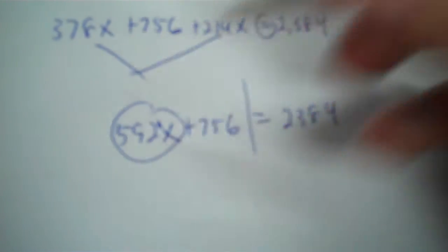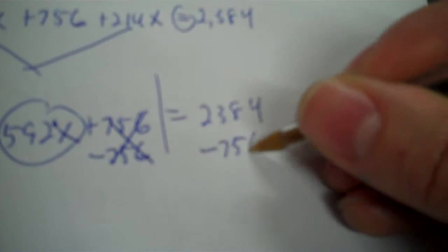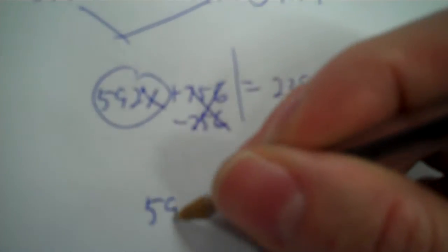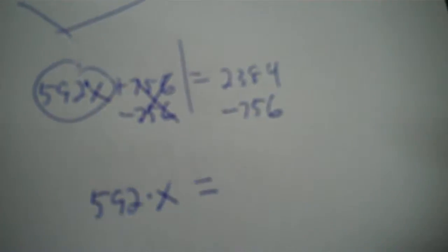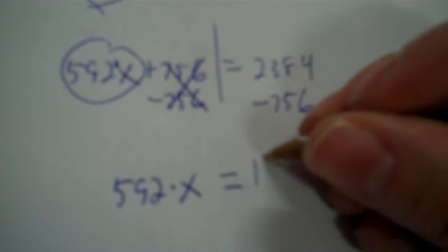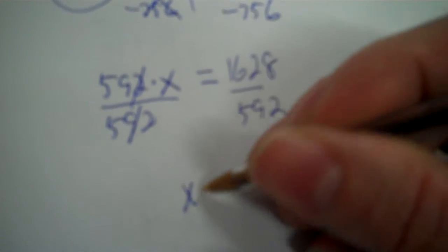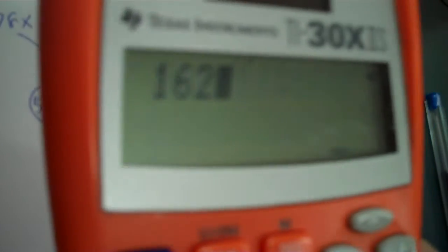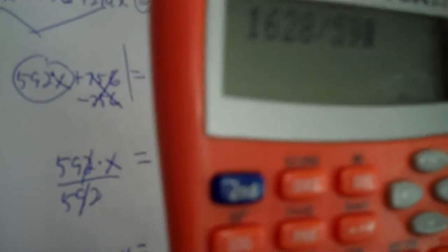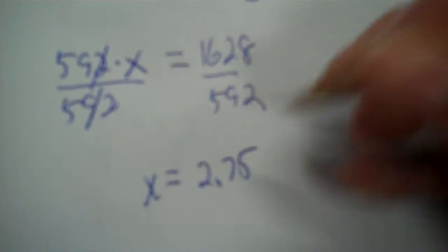So you got times and plus, so you undo the plus. You subtract 756. So 2384 minus 756, 1628. Then it's dividing time to find the missing factor of the X. So I divide 1,628 by 592, and that's 2.75.